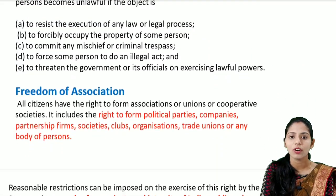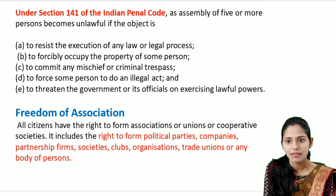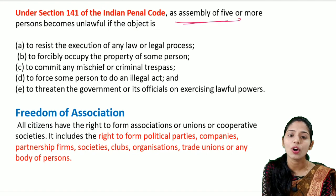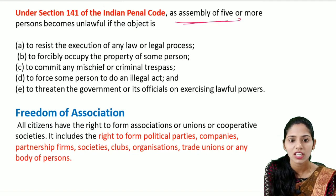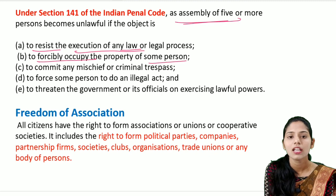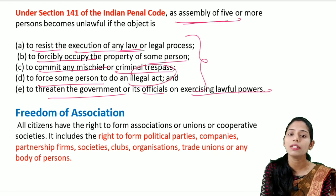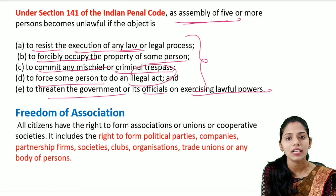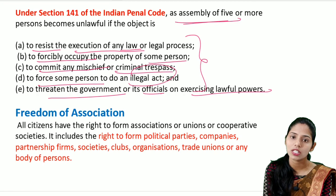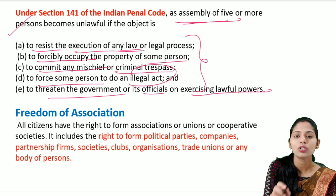Second, Section 141 of IPC: an assembly of five or more members will be unlawful if they restrict execution of any law or legal process, forcibly occupy property, commit mischief or criminal trespass, force someone to do an illegal act, or threaten the government or its officials in exercising lawful powers. Whenever Section 141 is imposed, any assembly of five or more persons will be illegal.